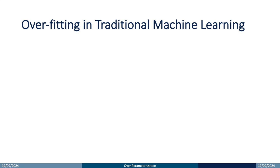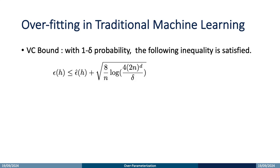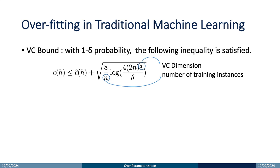Here we show a theorem to explain why too many parameters will cause overfitting. Mainly, this can be explained by the VC bound. This inequality holds with probability 1 minus delta. The left-hand side is the testing error, and the right-hand side is the training error plus a square root term called the generalization gap, which determines the gap between training error and testing error. Overfitting happens when the generalization gap is large. There are mainly two factors controlling this gap: the number of samples n, and the VC dimension d, which scales with the number of parameters. The more parameters in a model, the larger the VC dimension, and the more prone to overfitting.